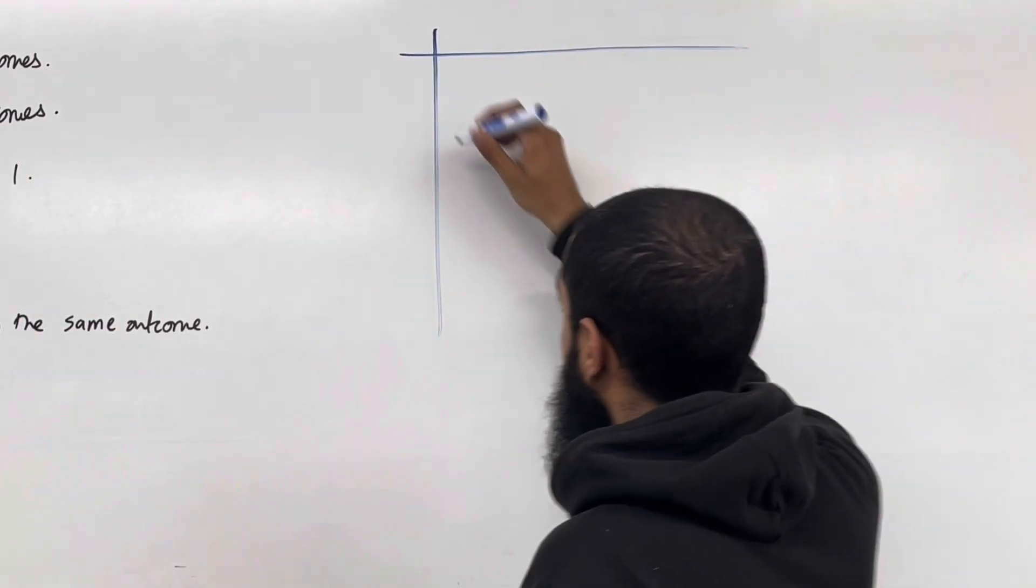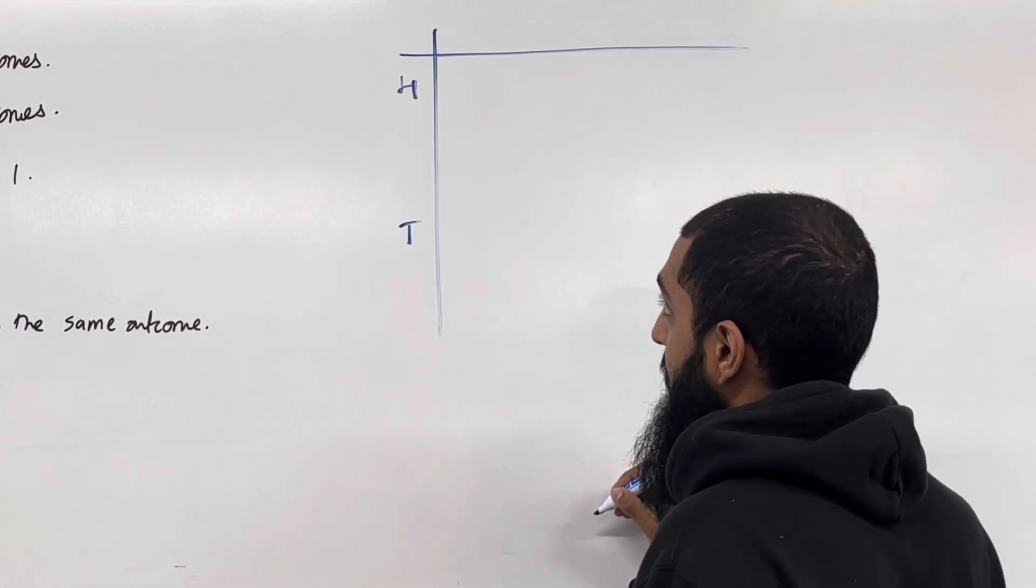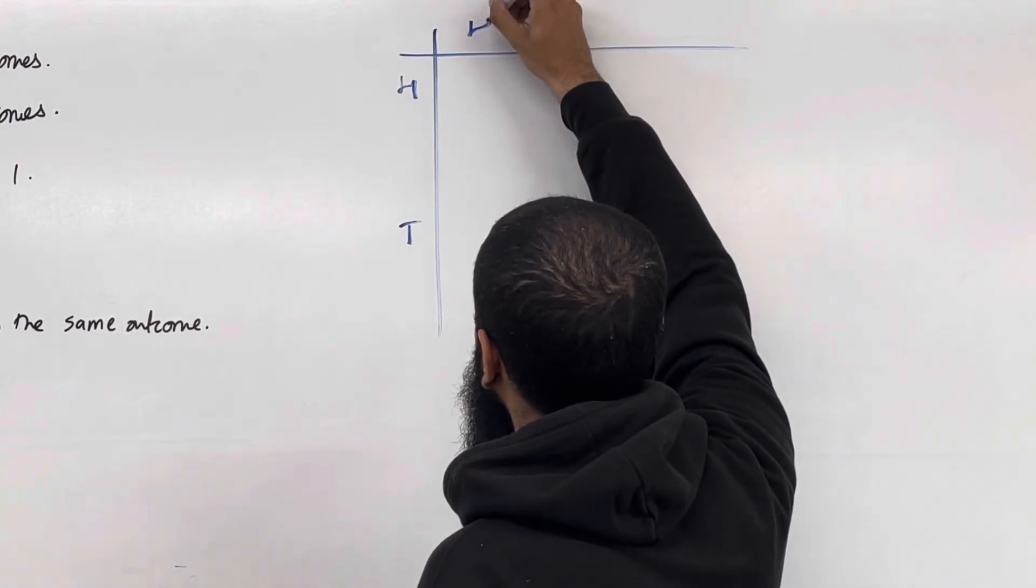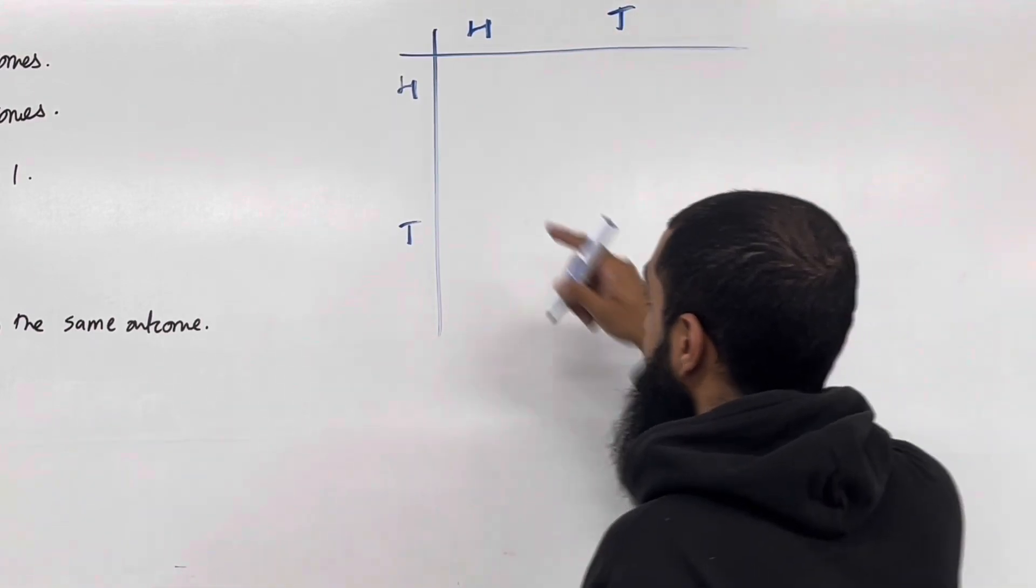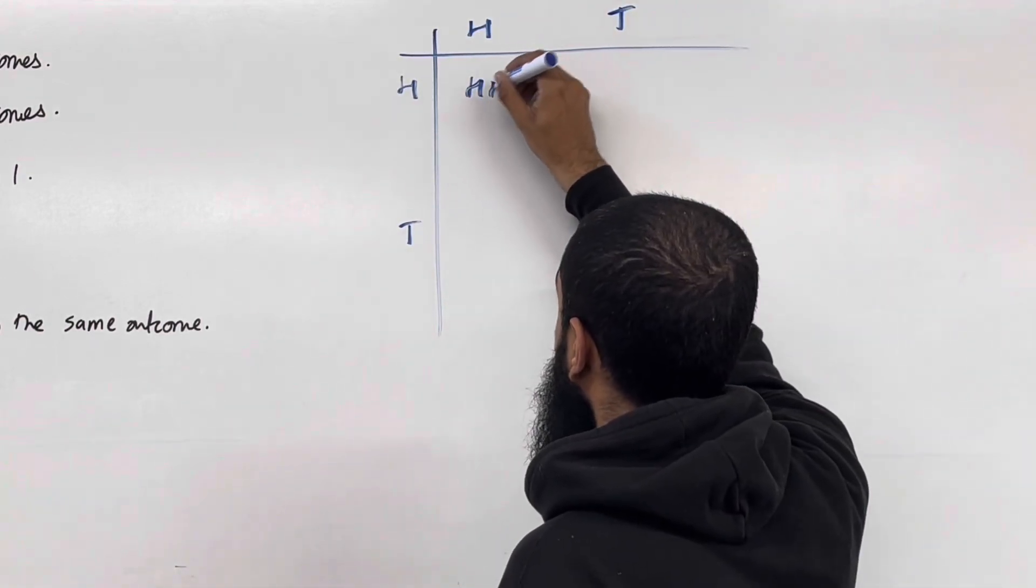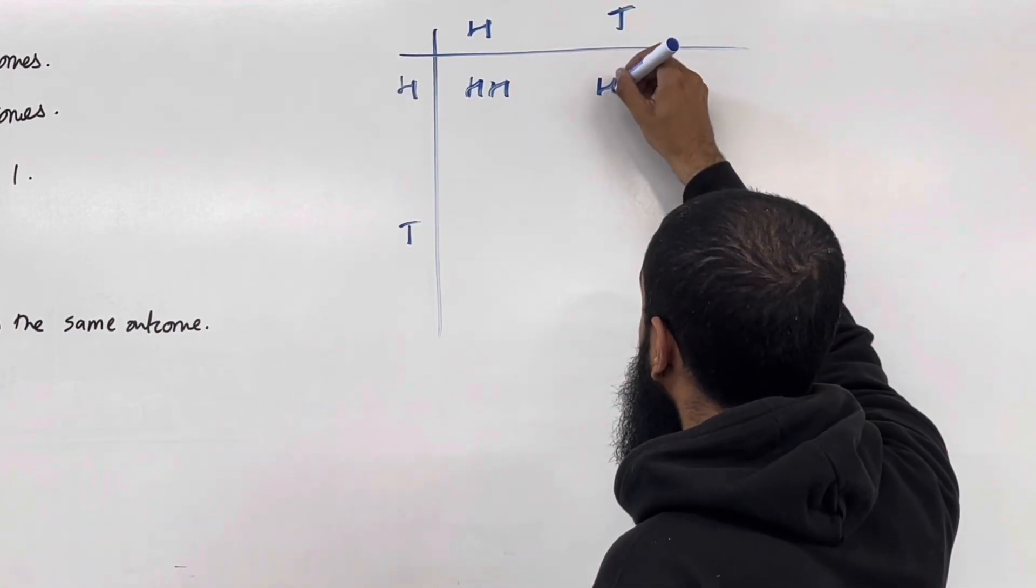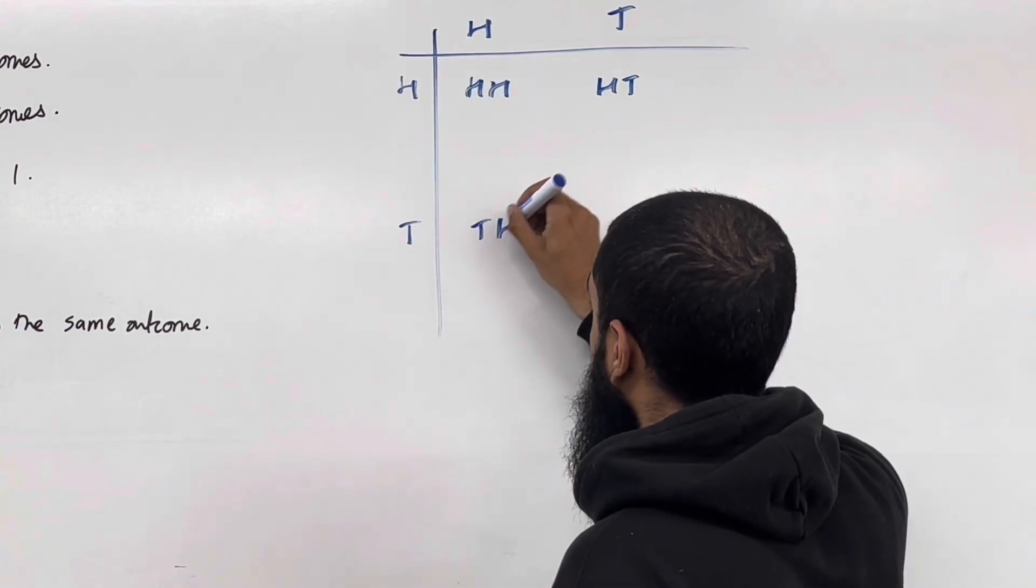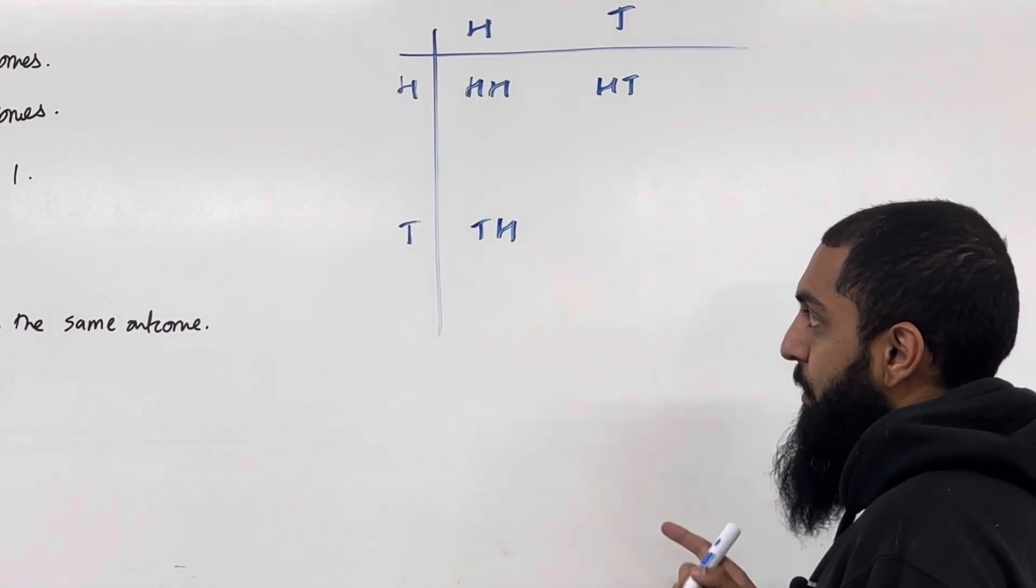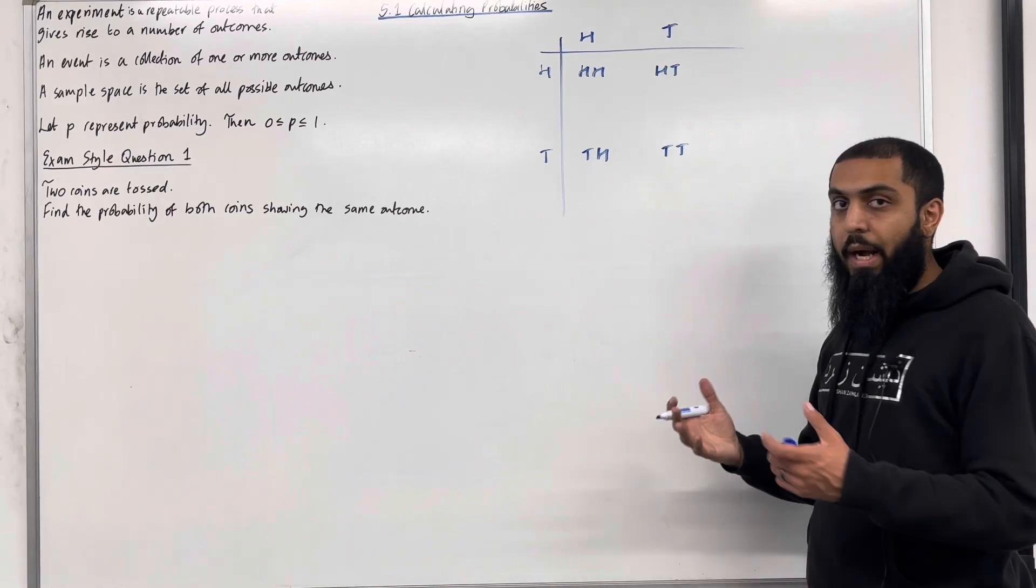For the first coin, I can get head or tail. For the second coin, in the same way, I can get head or tail. The first possible outcome is head, head. The second possible outcome is head, tail. Third possible outcome, tail, head. And the final and the fourth possible outcome is tail, tail. So there are four outcomes in total. The probability will be out of four.